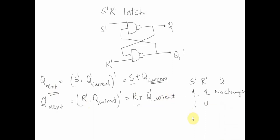This S-bar R-bar latch is just like the SR latch but with inverted pins. I hope this was clear. In the next lecture, I will talk about one more type of latch called the D latch. This lecture covered different combinations of memories, NOT gates, the RS NOR latch, and the S-bar R-bar NAND latch. Thank you and stay tuned.